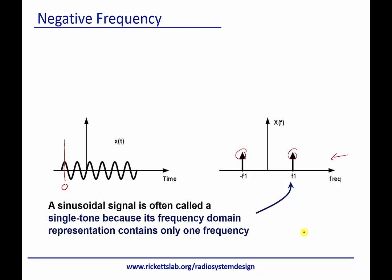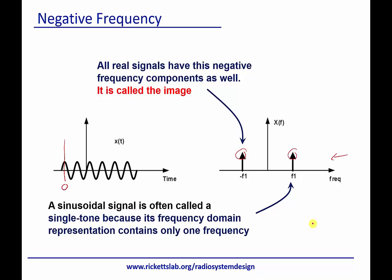And so we often say that a sinusoid is a single tone because it contains a single delta function in the frequency domain. We also need to remember that all real signals have a negative frequency component as well or sometimes called an image. So whenever you look at the frequency domain, you should always see the image if it's a real signal. Now I should just be real careful.